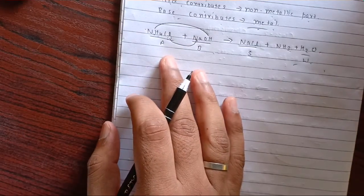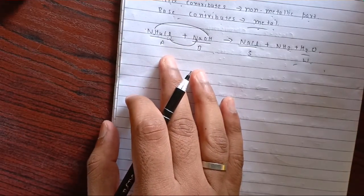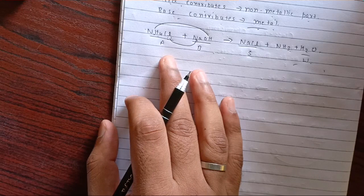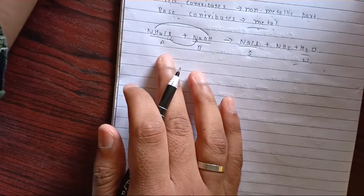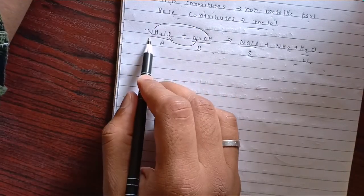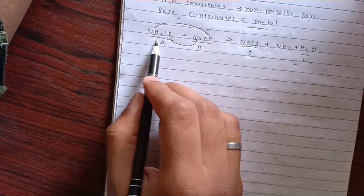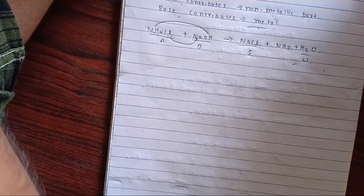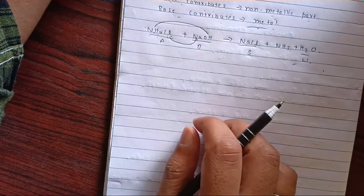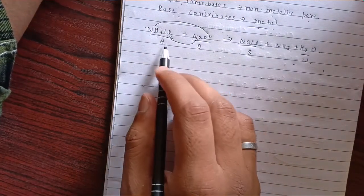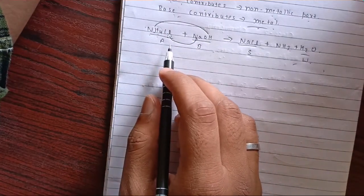Ammonium itself is a non-metallic group. That is why ammonium salts are an exception.